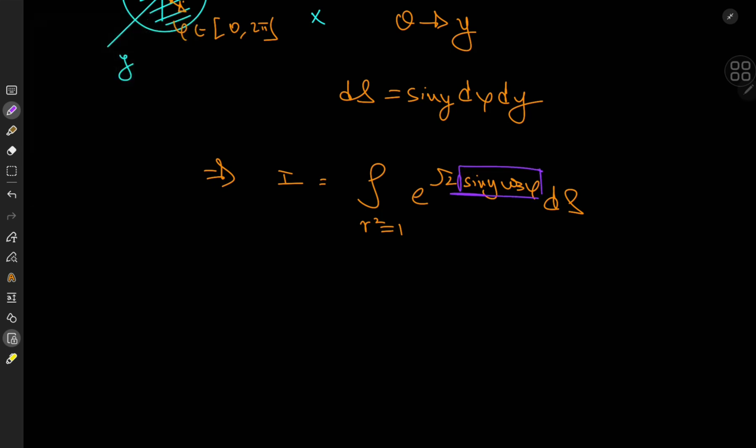Well we'll notice something with the argument of the exponential function. We'll notice that this is sine y times cosine phi, which is cool once again because in spherical polar coordinates we have x here equal to r sine of theta cosine phi.